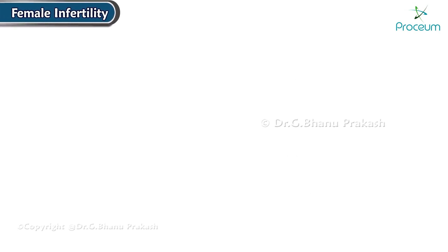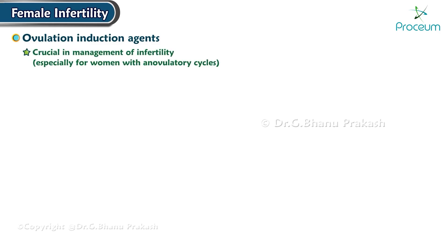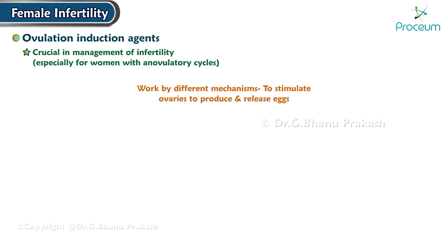Hello there everyone! In this module, we'll be learning about female infertility. First, let's learn about ovulation induction agents. Ovulation induction agents are crucial in the management of infertility, especially for women with anovulatory cycles. These medications work by different mechanisms to stimulate the ovaries to produce and release eggs, thereby increasing the chances of conception.